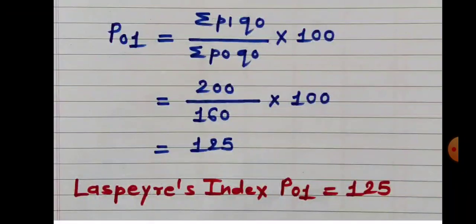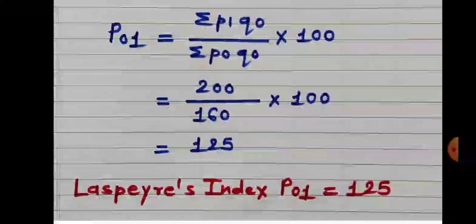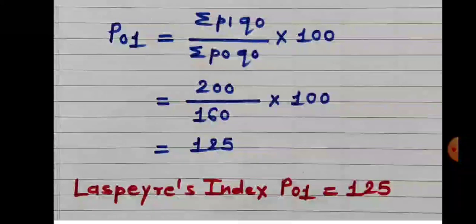Now apply the formula of Laspeyres price index number: P01 is equal to Sigma P1Q0 divided by Sigma P0Q0 into 100. Sigma P1Q0 is 200 and Sigma P0Q0 is 160. So 200 upon 160 into 100, we get 125. So Laspeyres price index number is 125.